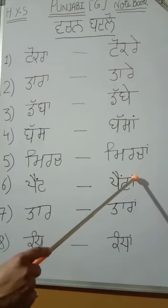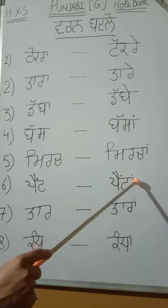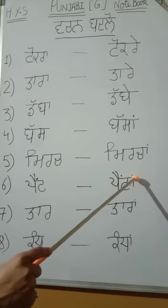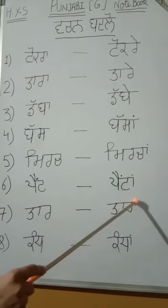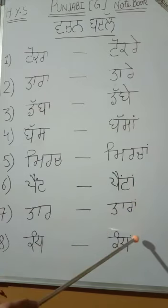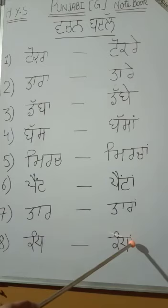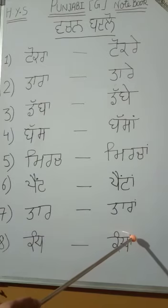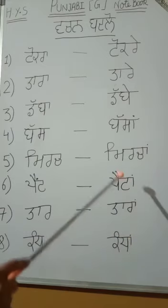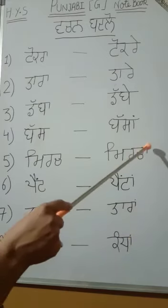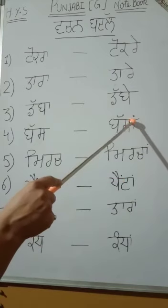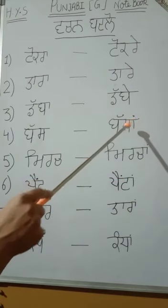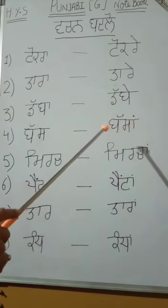Write bindi on top of Tarkhan. Kandhaan — write bindi on top. Tare — Kandhaan, write bindi on top. Mirchaan — write bindi on top. Bassaan — write bindi on top. Bindi, tipi, dab — in Punjabi subject, pay attention to these diacritical marks, otherwise the meaning will be wrong.